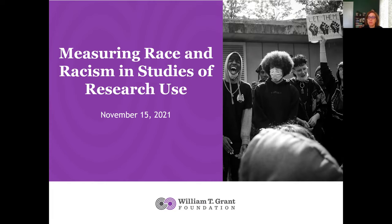We're going to begin today by hearing from two researchers who do not study the use of research evidence, but who have made studying race — and the ways it is produced, reproduced, and even challenged in social interactions and organizations — central to their work. We'll begin by hearing from Amanda Lewis, Director of the Institute for Research on Race and Public Policy and Distinguished Professor of Black Studies and Sociology at the University of Illinois. Then we'll turn to Johanna Quinn, Assistant Professor of Sociology at Fordham University.